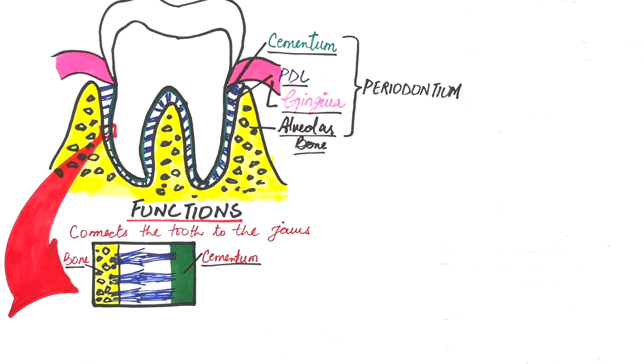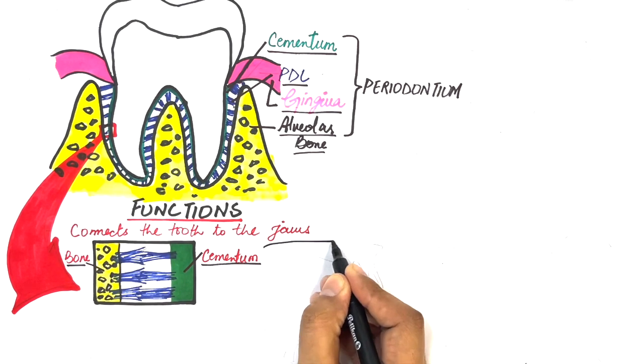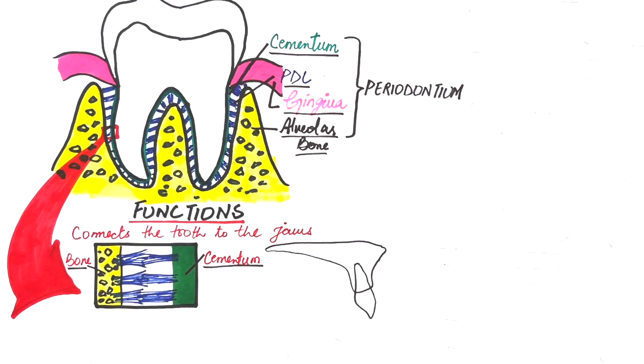PDL fiber bundles hold the teeth in sprung suspension, meaning that each tooth is capable of small movements in its alveolar bone socket.